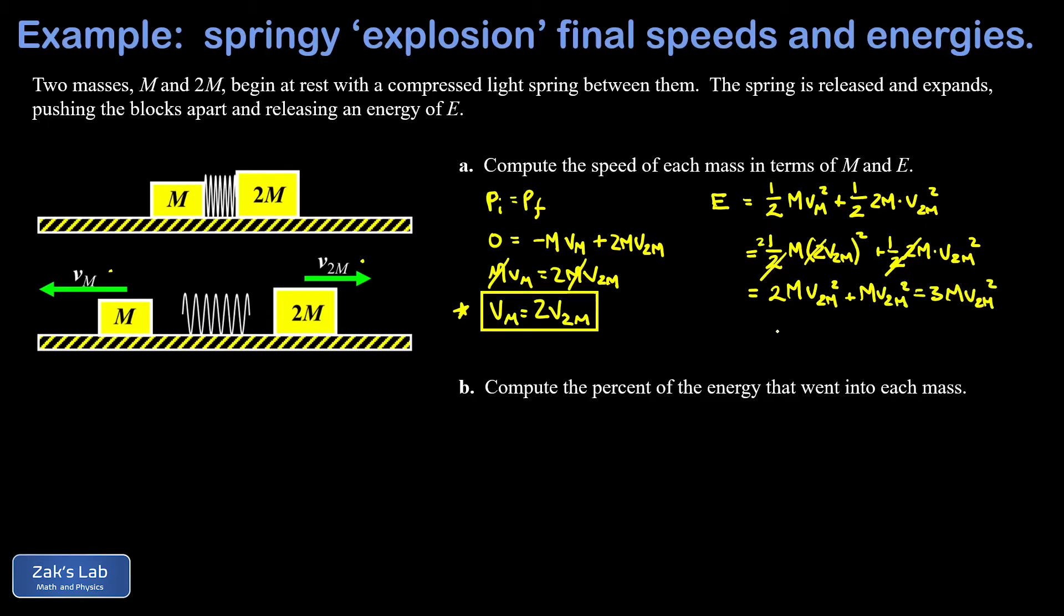Now we just have to solve for v2m so I just divide both sides by 3m. That gives me an E over 3m and square root the result. So I have v2m is equal to the square root of E over 3m. Now we can take that result for v2m and plug it in where we originally solved for vm in terms of v2m.